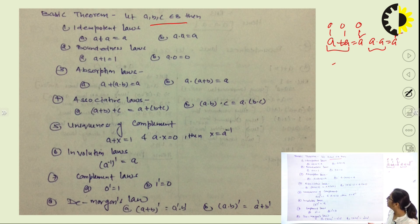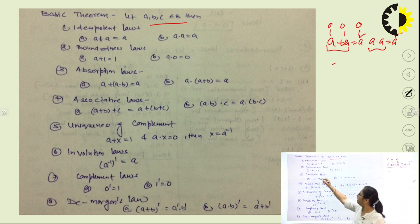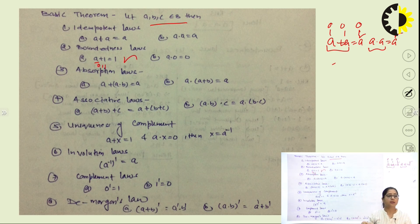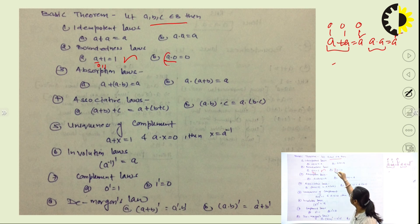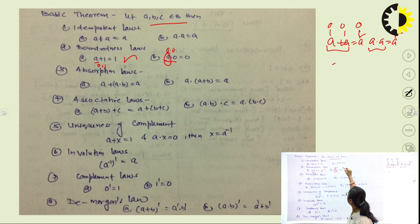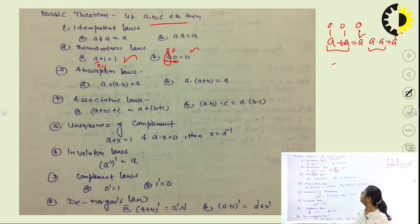Next is the boundedness law. Whatever the value of a — 0 or 1 — a plus 1 always gives you 1, because we have added 1. In case of multiplication, whatever the value of a, a dot 0 always gives you 0, because it is multiplied with 0. So 1 dot 0 becomes 0 and 0 dot 1 also becomes 0.